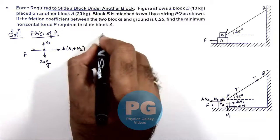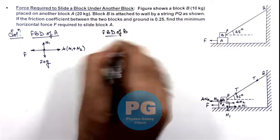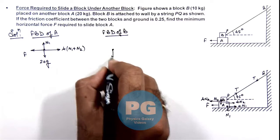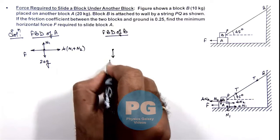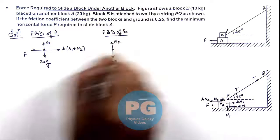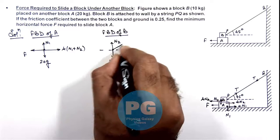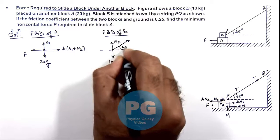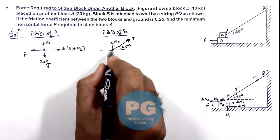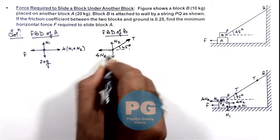For the free body diagram of block B: it experiences its weight of 10g downward, a normal reaction N2 upward, and the tension in the string acting at an angle of 45 degrees from the horizontal. The friction force mu*N2 acts on block B toward the left.